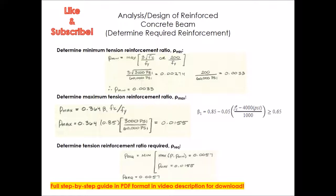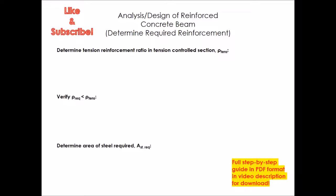Then determine the required reinforcement ratio: take ρ = 0.0057 from the reinforcement index, compare it to the minimum (use the larger), then compare that to the maximum and take the smaller. When all is said and done, the required reinforcement ratio is 0.0057. I try to define every term used in the description below — if you have questions, please ask. This tutorial is aimed at practicing engineers or those familiar with concrete and ACI, but don't let that deter you.